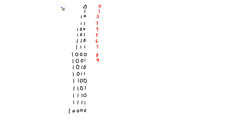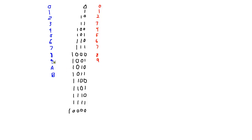Let's do hexadecimal over here on the right. 0, 1 — hopefully you can see these are lining up — 2, 3, 4, 5, 6, 7, 8, 9. But unlike decimal, we don't have to stop here. We have letters we can go to: A, B — notice I'm saying the letters and not the decimal numbers 10 or 11, because we're in hex. It's not 10, it's A. Even though in decimal its value is 10. A, B, C, D, E, F.